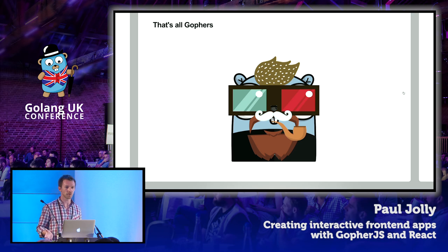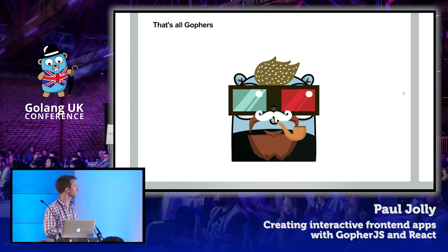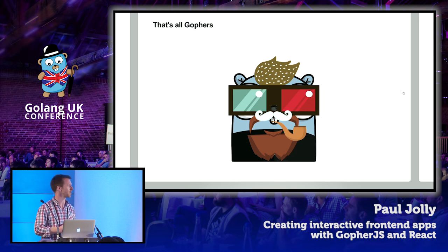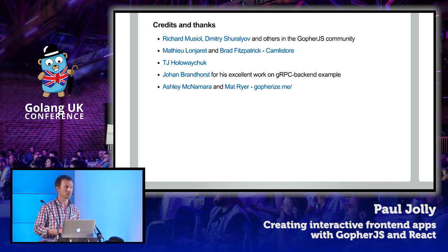That's pretty much it. We've covered writing a Go-based front-end app that runs within the browser using the React wrapper that is myitcv.io/react. It doesn't specify where you get your data from or how — that's really up to you, which I think is a nice thing. And as Ashley and Matt have kindly demonstrated, it allows you to write rather cool interactive apps that run within your browser. Just a few quick thanks to all of these people listed here for their various support in making this actually happen — all very much appreciated.